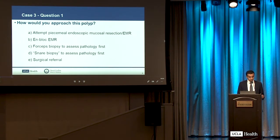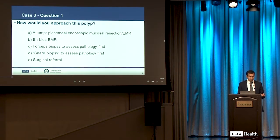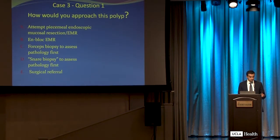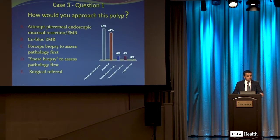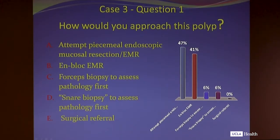We have an ARS question: how would you approach this polyp? Attempt piecemeal EMR, go for en bloc EMR given its size, biopsy to assess pathology, use a snare to sample it, or refer to surgery? Assuming this was the first time seeing it — what would you do? Most people would try to resect or refer for resection. 41% would go for en bloc, and about half would go for piecemeal resection.